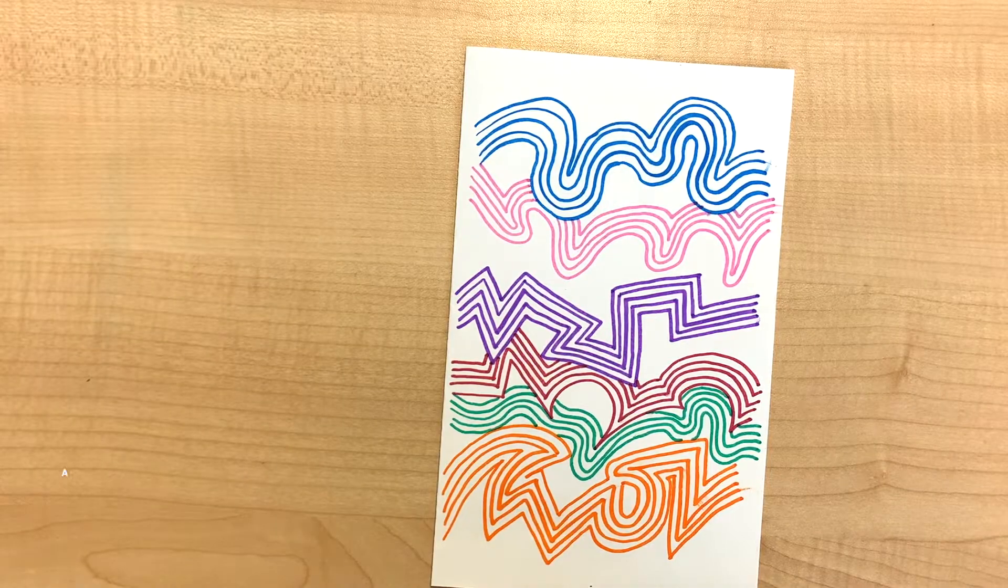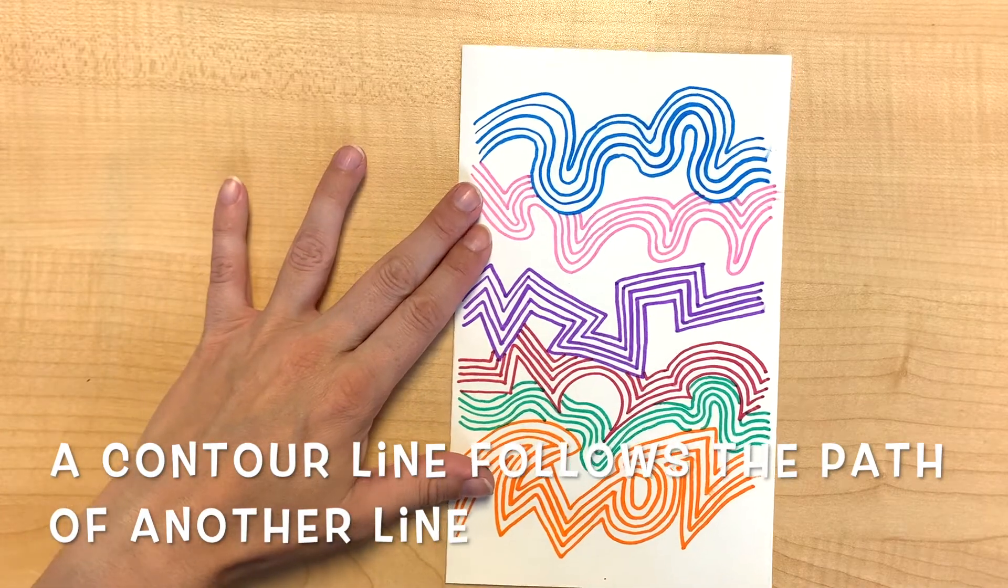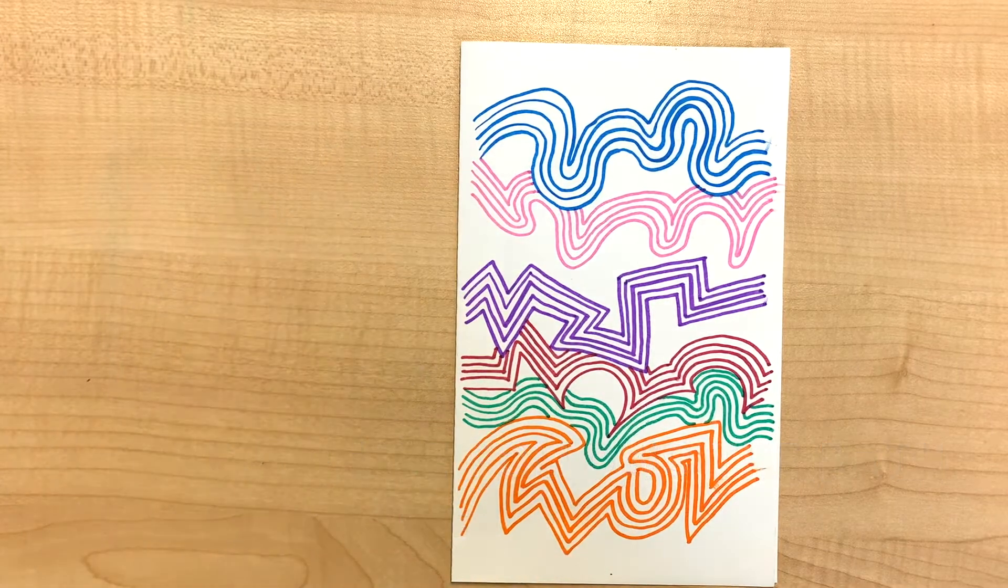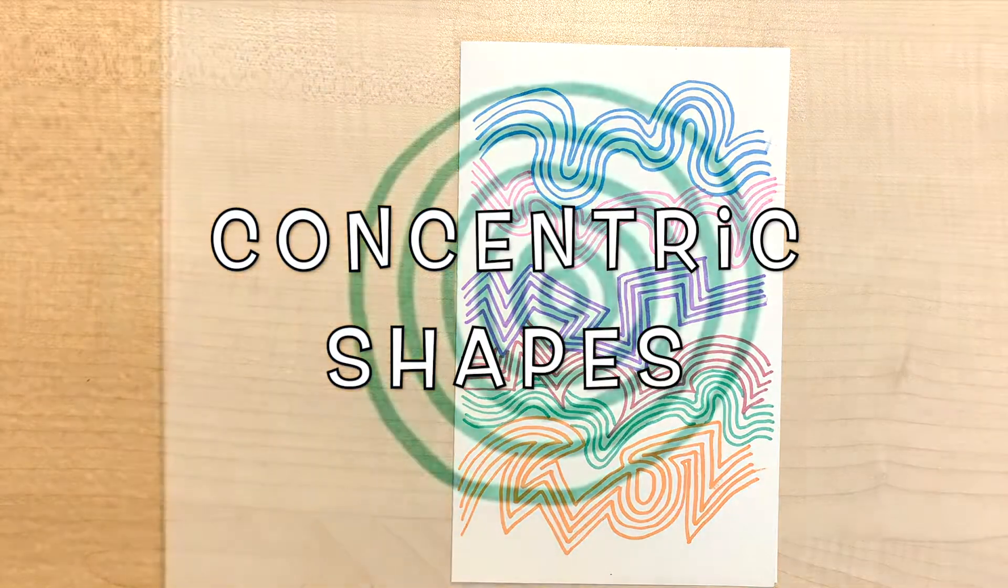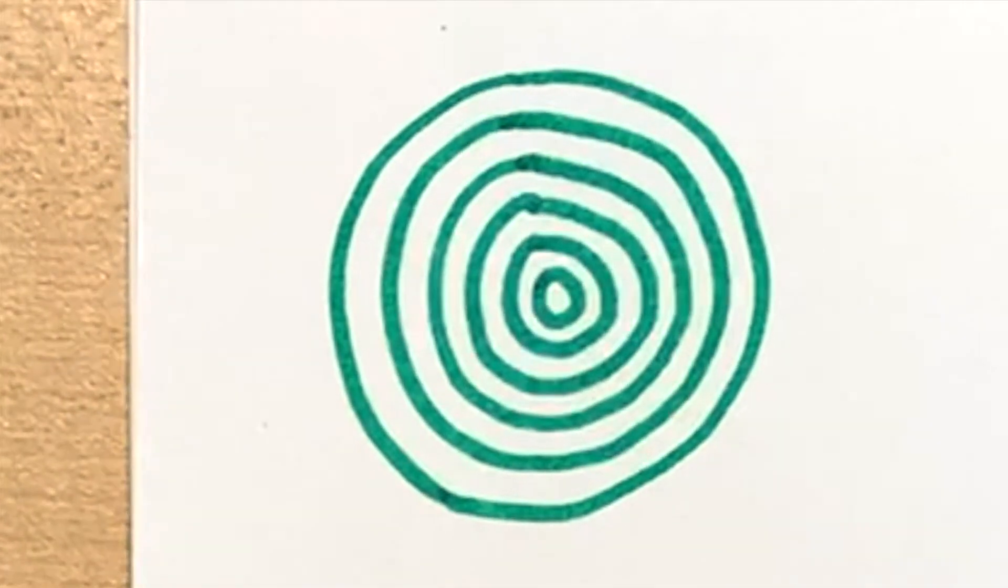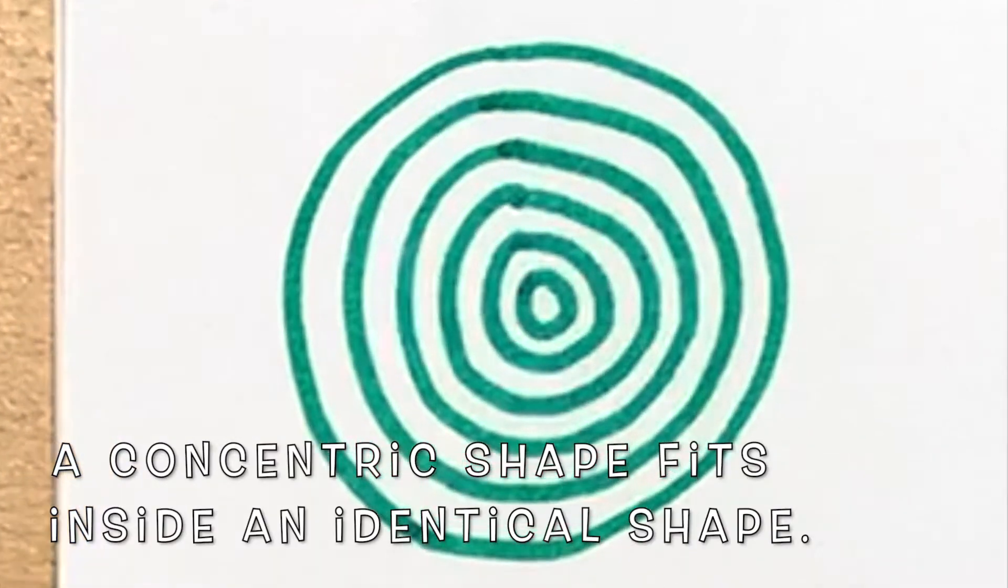Last week we worked on contour lines, lines that followed the curve of an original line. Now we're going to talk about concentric shapes. A concentric shape is a shape that fits inside an original shape.